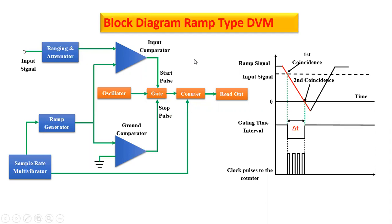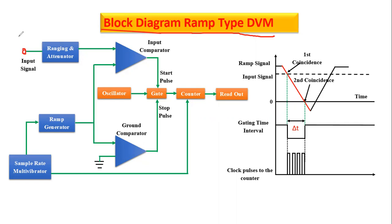I will explain each block one by one. When we see this block diagram, it has only a few blocks and there are some waveforms. Including both, we are talking about the block diagram of ramp type DVM. This is our block diagram. In the block diagram, if we start from here, we give an input signal — the signal which we have to measure.